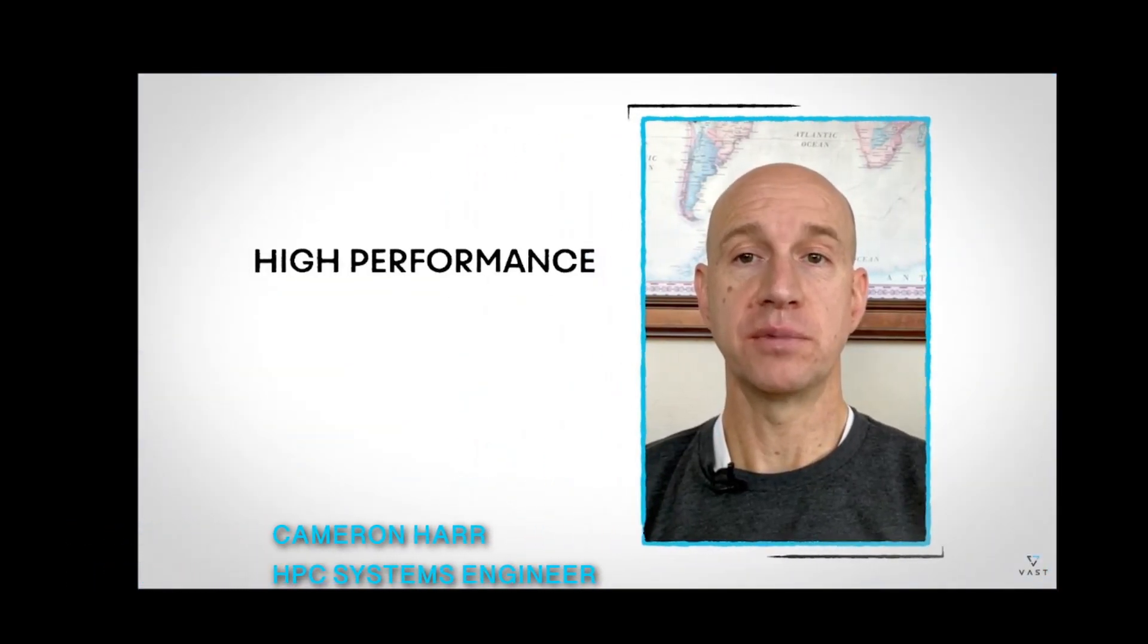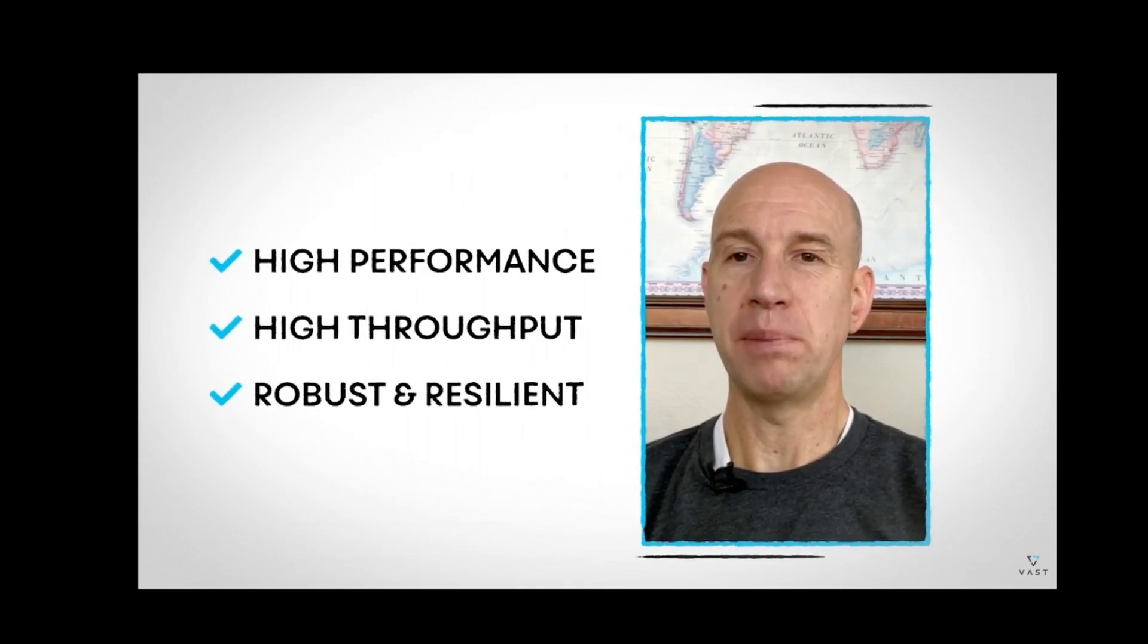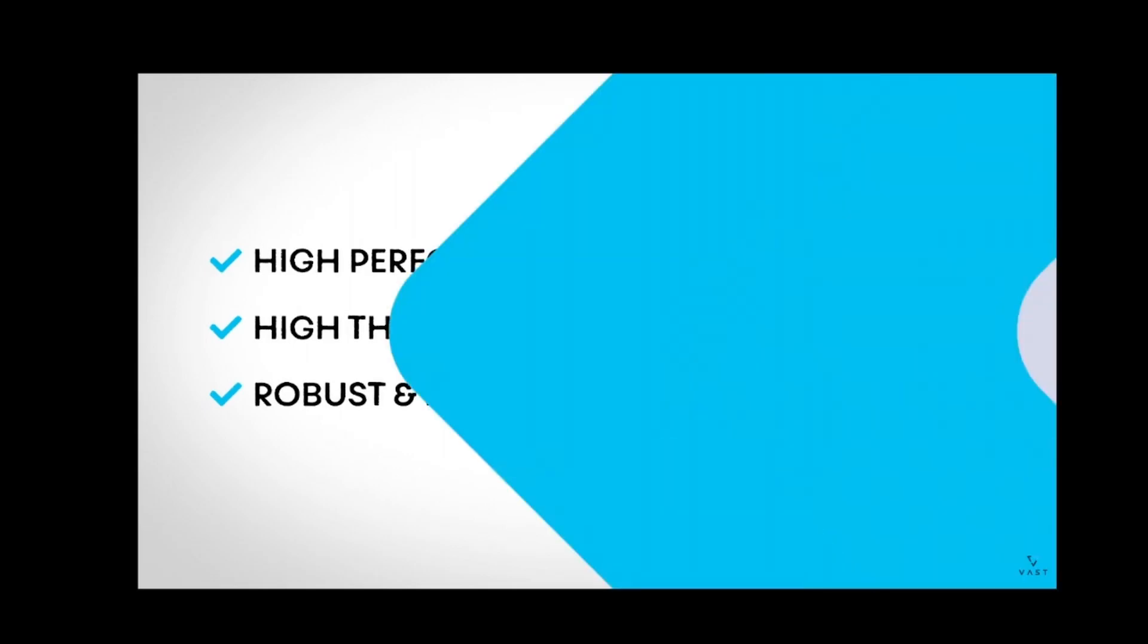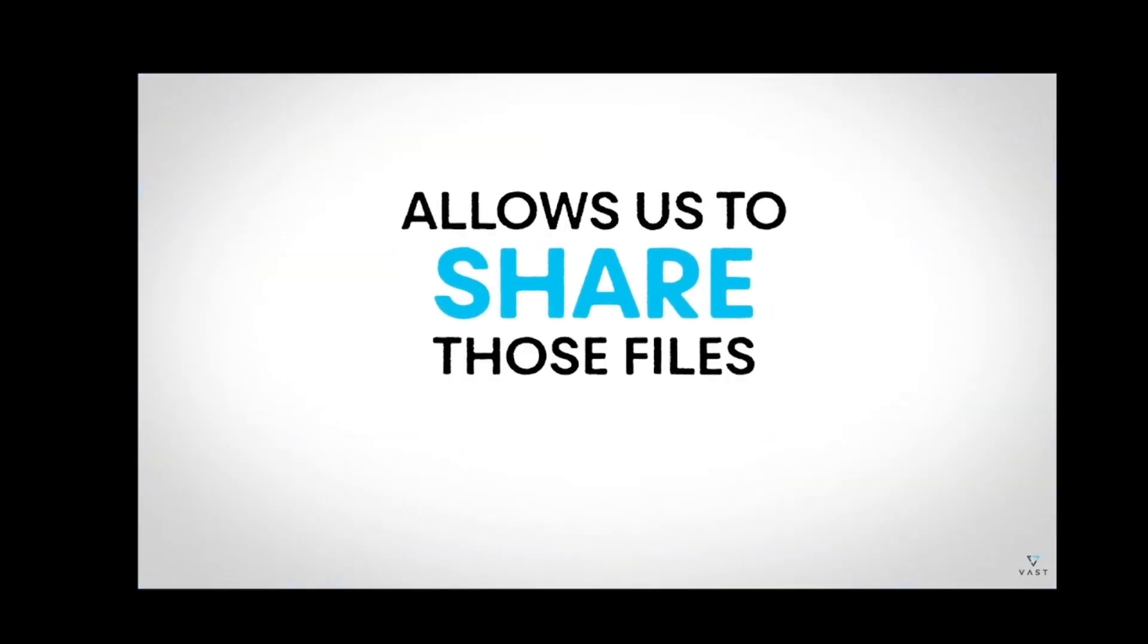Like Felice mentioned, for our high-performance computing systems, we need something that's very fast, has a lot of throughput, and is robust enough that we can really pound on it with our mini supercomputers. Having a file system like VAS allows us to share those files seamlessly, and that's the key to success.